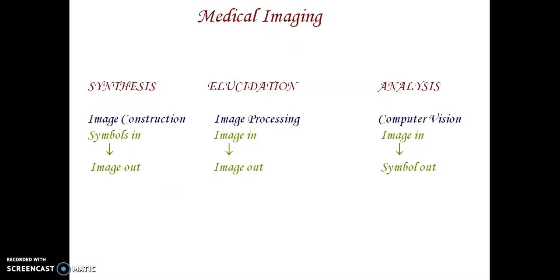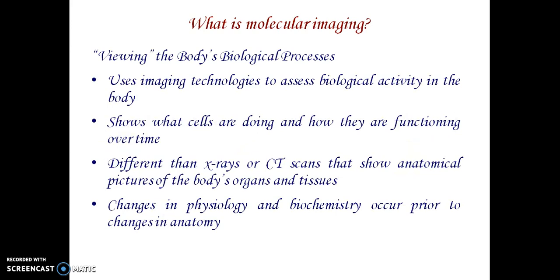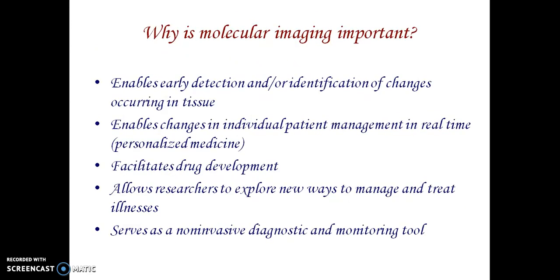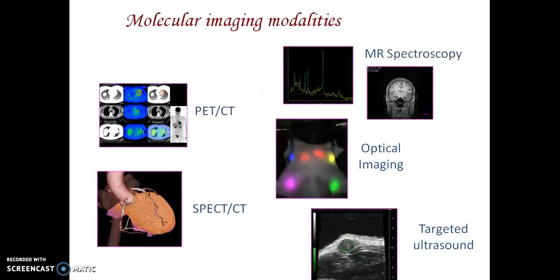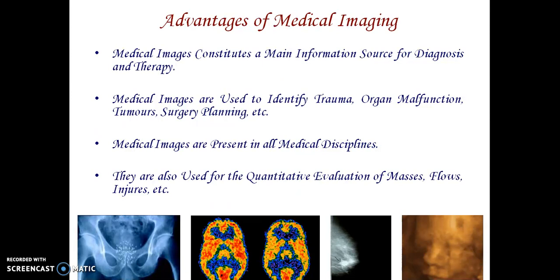Image construction, image processing, and computer vision differ: image synthesis takes samples as input and produces images; image processing takes images in and produces images out; computer vision takes images in and produces symbols or data out. Molecular imaging uses image technologies to study biological activities and functioning, enabling early identification and diagnosis. Molecular imaging modalities include MRI, SPECT, optical imaging, and targeted ultrasound. Medical images constitute the main information source for diagnosis, therapy, and surgery planning, helping medical disciplines in many ways.